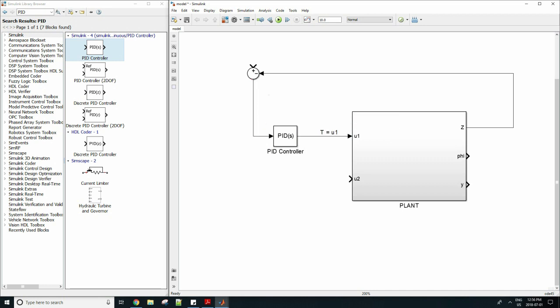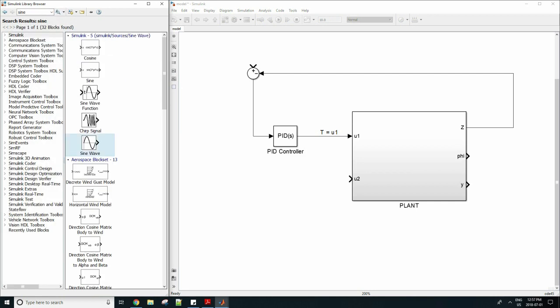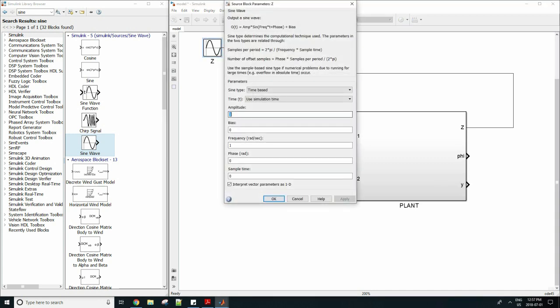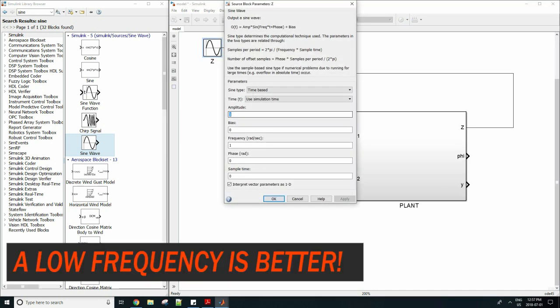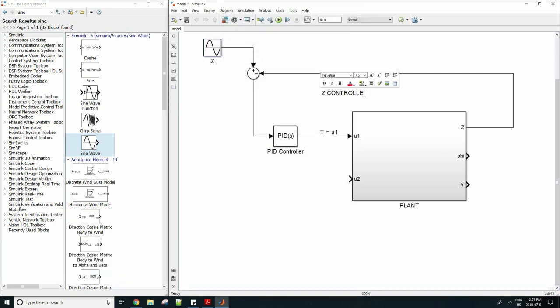So now we need to set our z function, the sine function as 5 sine t as mentioned in the problem statement. So we can quickly do that using the sine wave. Set the amplitude to 5 and the frequency to 1. The frequency is simply omega so it tells you how many times per second the function will oscillate. That's our z controller and our error and also the z output as labeled here.